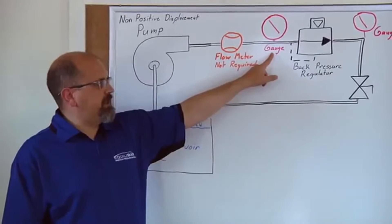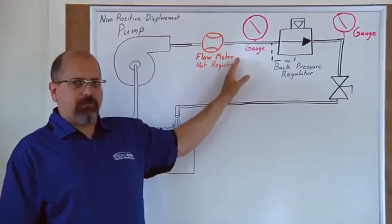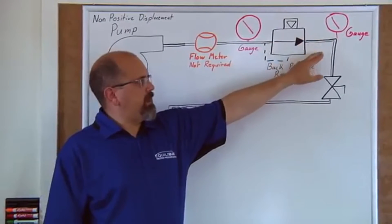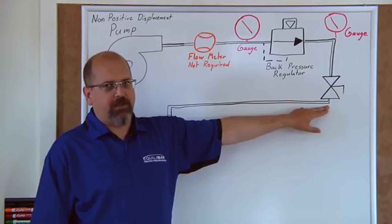And I'll see that pressure on this gauge. Once I set the flow rate from the pump, that flow rate will come out of the back pressure regulator and into the system.